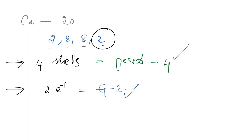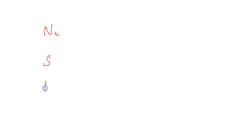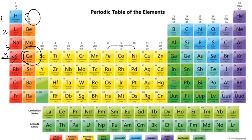That's how we find the position of elements in the periodic table. I also have an exercise for you to build more confidence. Using the method discussed in this video, try to find the position of sodium, sulfur, and phosphorus. You can share your answers in the comment section and I'll verify if you've got them correct. In case you have any doubts, don't hesitate to let me know through the comment section. Bye bye everyone!